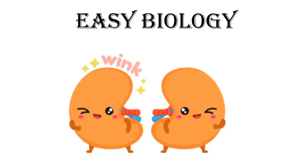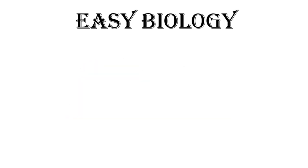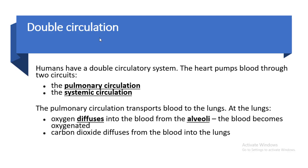Welcome to Easy Biology. There are two circulatory systems: one is a single circulatory system and the other is a double circulatory system. Humans have a double circulatory system.